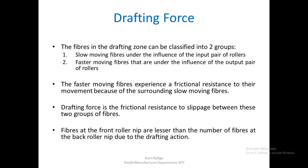One thing we must observe is that the number of fibers under the front roller nip is fewer than the number at the back roller nip. This is because in the drafting zone, as draft increases, the fibers in the cross section become fewer and fewer. So the number of fibers at the front roller nip will always be less compared to those under the back roller.